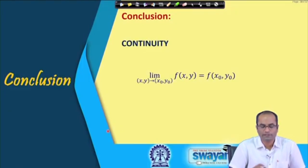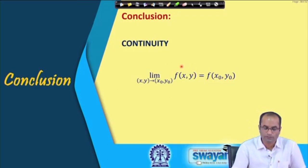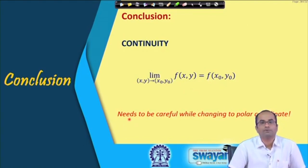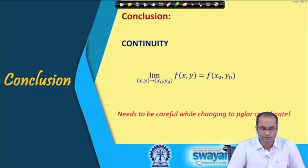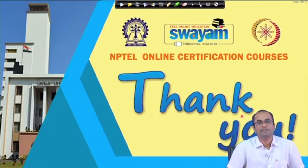We have discussed continuity: if the limiting value equals the function value at a point, the function is continuous there, and the function must be defined at that point. We also observed that we need to be very careful when changing to polar coordinates, as it may mislead to wrong conclusions in many cases. These are the references used to prepare these lectures. Thank you very much.